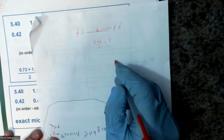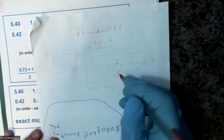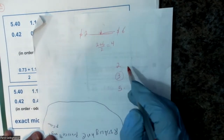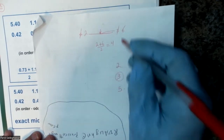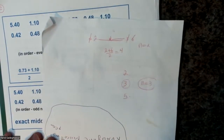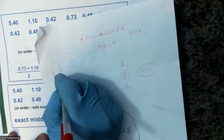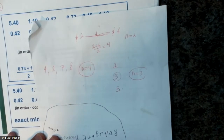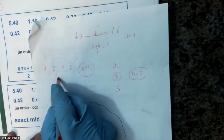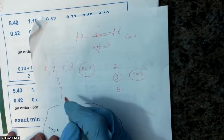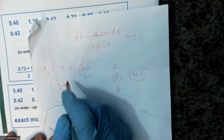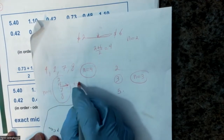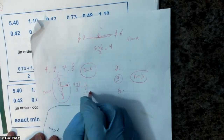If you have three numbers — like 2, 3, and 5 — the median is 3 because n is odd (n = 3). For another example with four numbers: 4, 2, 7, 8. First write them in order: 2, 4, 7, 8. Since n is even (n = 4), take the average of the two middle numbers: (4 + 7) / 2 = 11/2 = 5.5. That is your median.